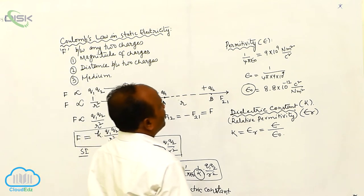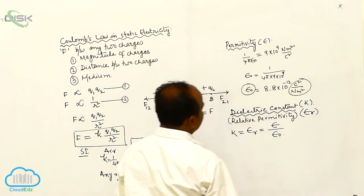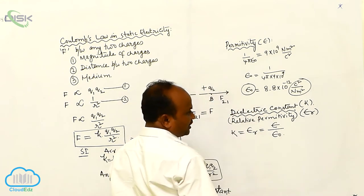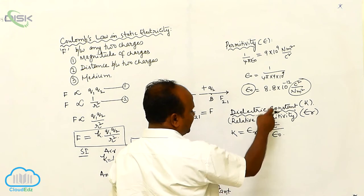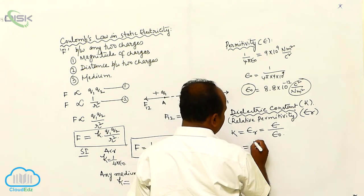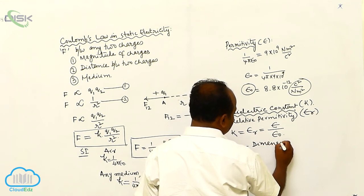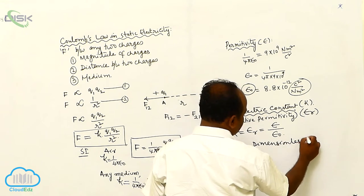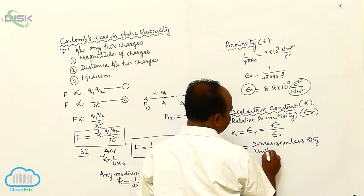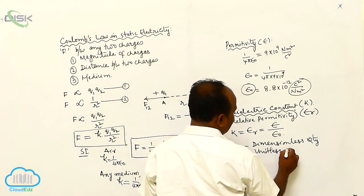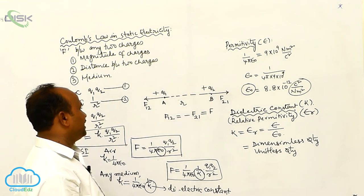For permittivity, there is a unit: coulomb square by newton meter square. The dielectric constant is a ratio of the same physical quantities, so the units cancel. Therefore, it is a dimensionless and unitless quantity. There are no units and dimensions for the dielectric constant.